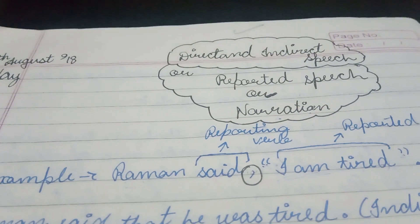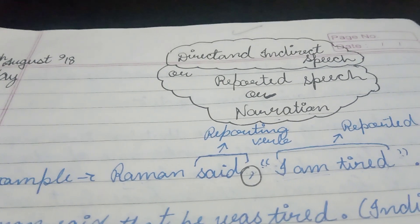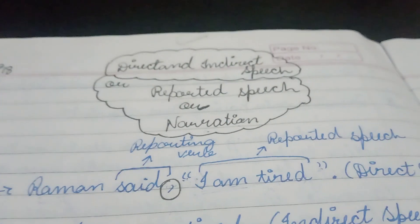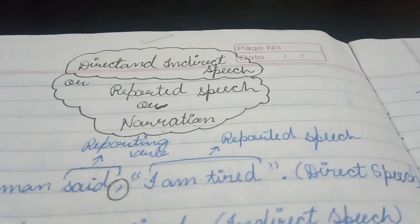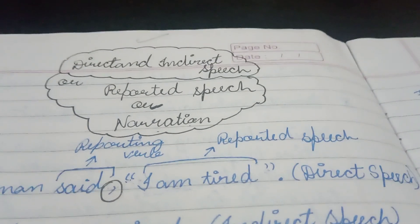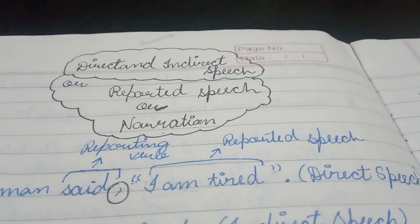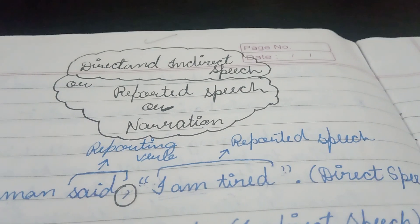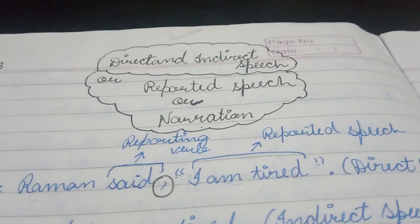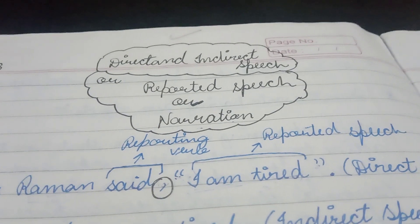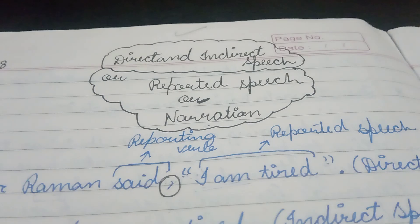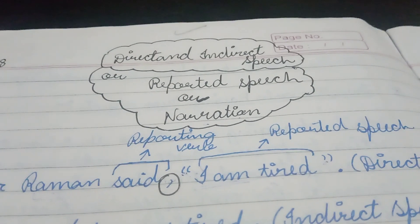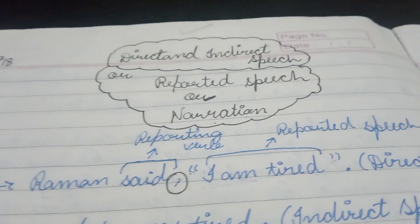A comma is used to separate the reporting verb from the reported speech, which is 'I am tired' under quotation marks. This is an example of direct speech — somebody said or uttered something and we are presenting it exactly as it was said, in quotation marks.